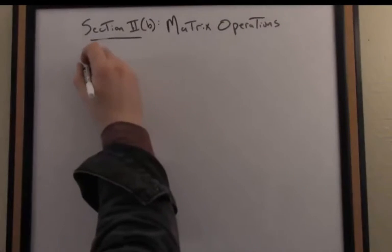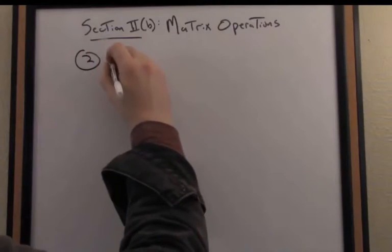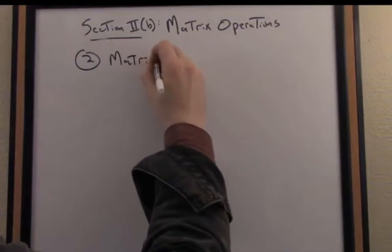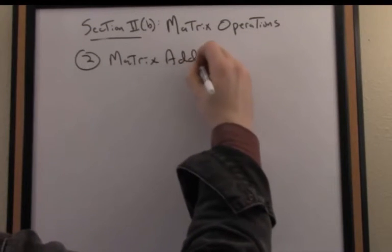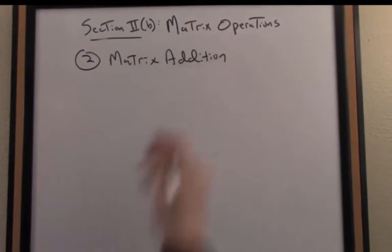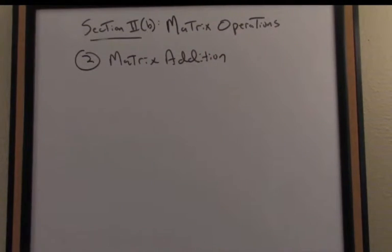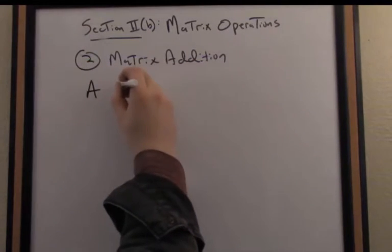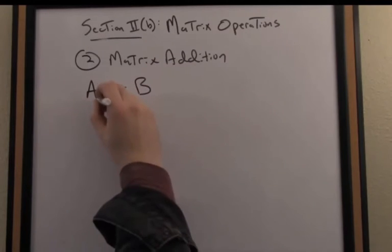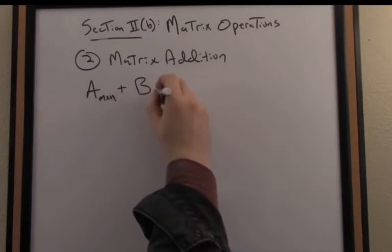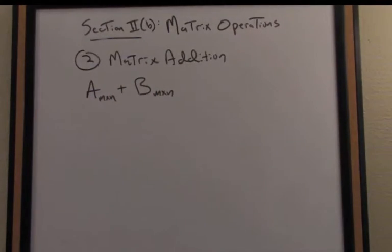Let's talk next about our second matrix operation, and that operation is matrix addition. It's worth noting that I can only add matrices that have the same dimension. So if I'm going to add a matrix A to another matrix B, in order for this operation to be well-defined, otherwise it's undefined, they must have the same dimension and the same number of rows and columns.